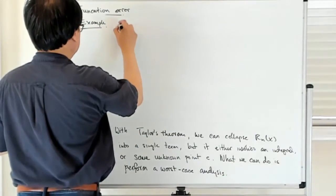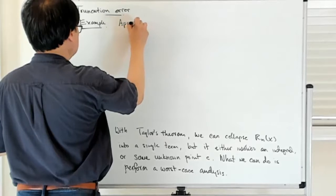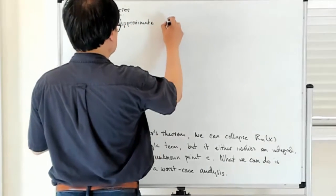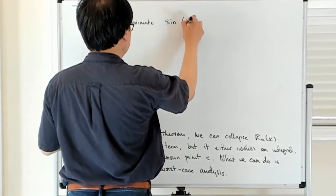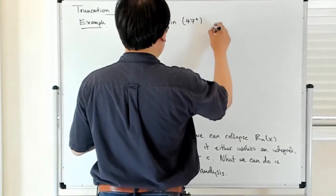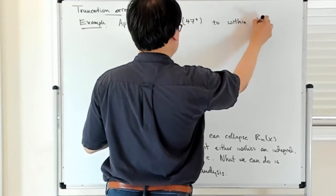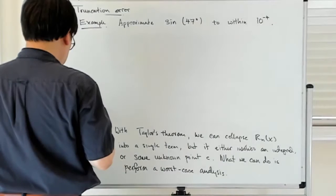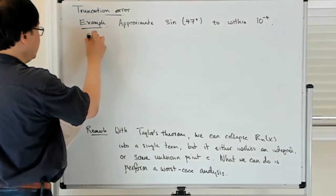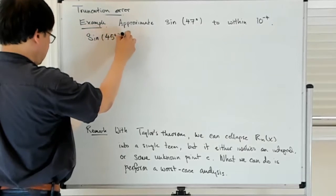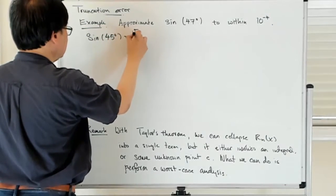And you know that sines and cosines are bounded in absolute value by one, from above by one. So it's easy to do this worst-case analysis. So let's just see what happens as an example. We want to approximate sine of 47 degrees to within 10 to the minus 4.